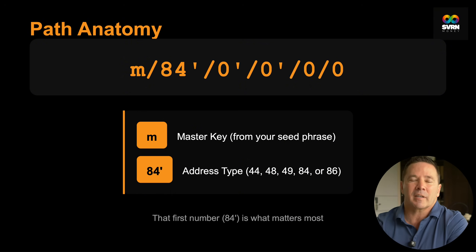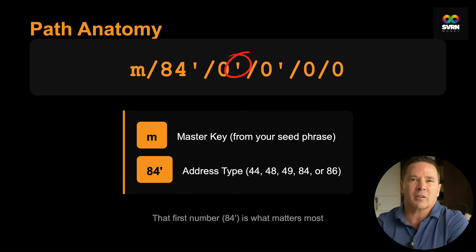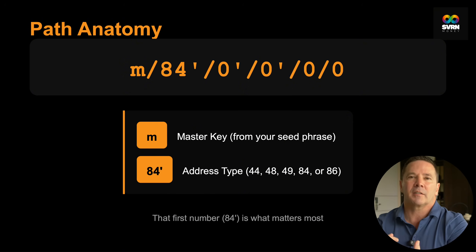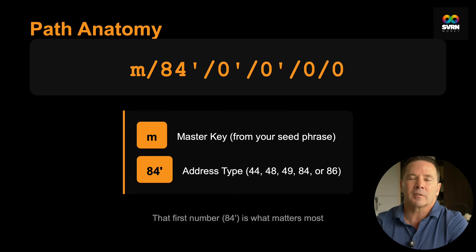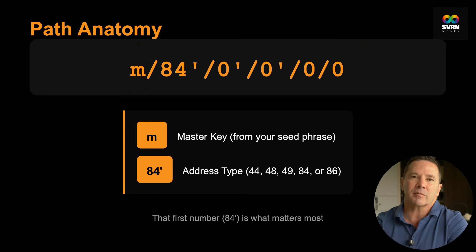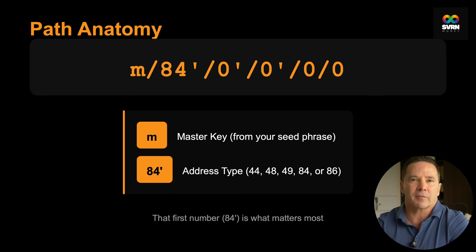You might notice some of the numbers have a little apostrophe or prime next to them, like the 84 and a couple of the zeros, but other numbers don't. That apostrophe means that it's hardened — it's a security feature. Those hardened positions require your private key to work with them, which adds an extra layer of protection to your wallet. The last two numbers don't have apostrophes because your wallet needs to generate new addresses without constantly referencing your private key.